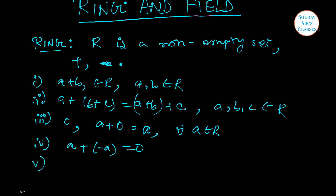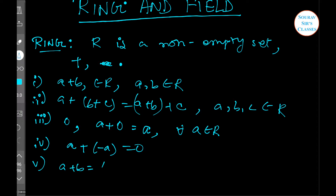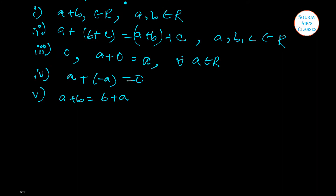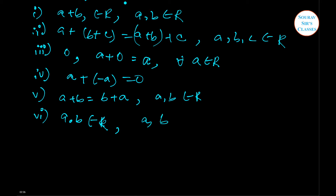Number five is that a plus b equals b plus a — that is, addition is commutative for any elements a, b belonging to R. The sixth property shows that R is closed under multiplication. That is, a multiplied by b will belong to R where a and b already belong to R.